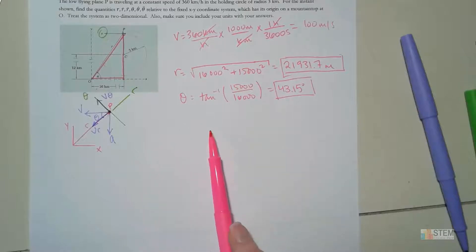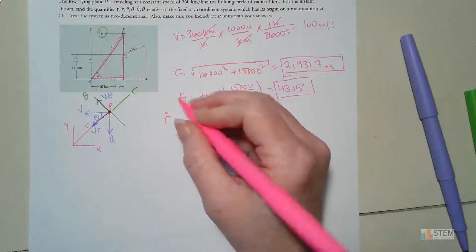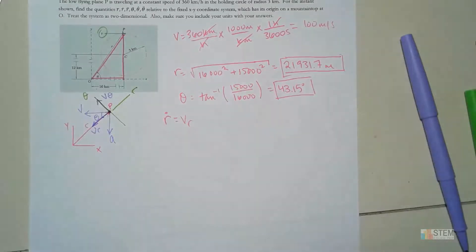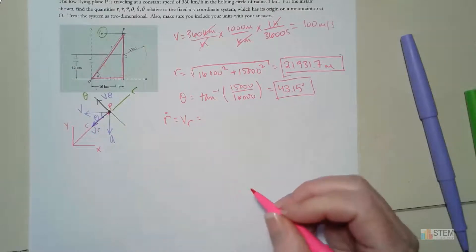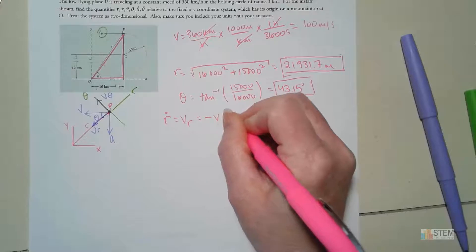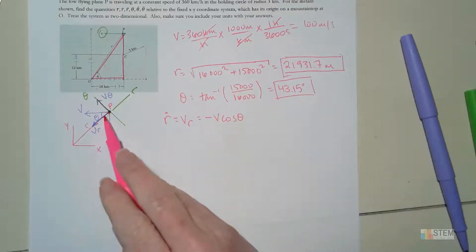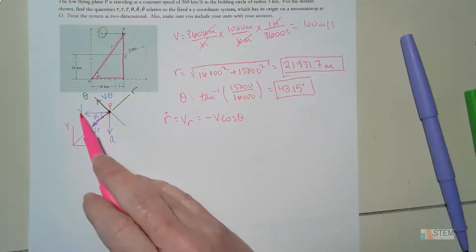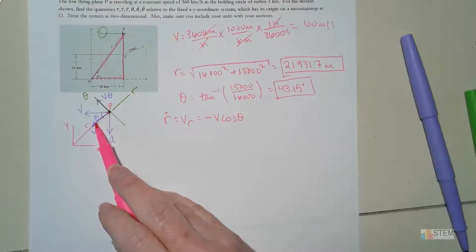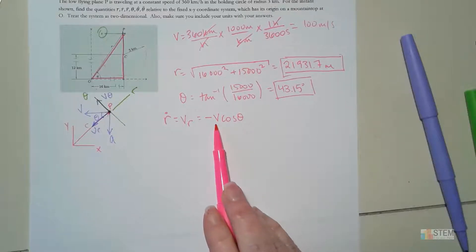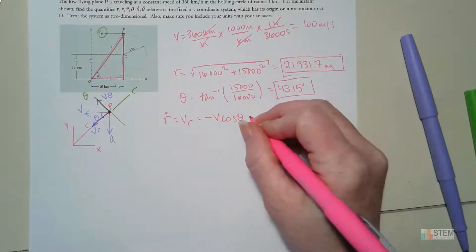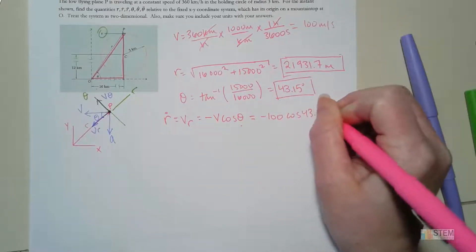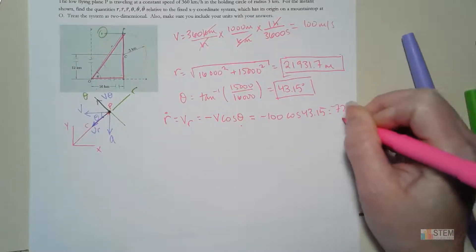Let's look at ṙ. From polar coordinates, ṙ = V_r. Nothing was given about V_r directly, but from the drawing V_r = −V cosθ — it's negative because the r component is in the negative r direction, and this is the adjacent side, so cosine θ. Plugging in: ṙ = −100 cos(43.15°) = −72.96 meters per second.